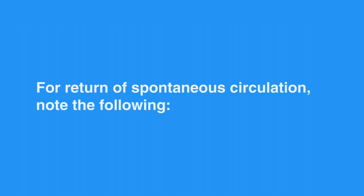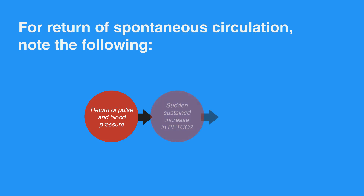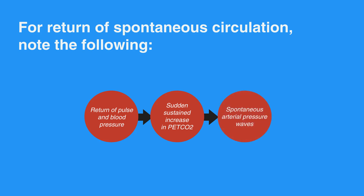For return of spontaneous circulation, note the following: return of pulse and blood pressure, sudden sustained increase in PETCO2 — typically greater than or equal to 40 mmHg — and spontaneous arterial pressure waves with intra-arterial monitoring.